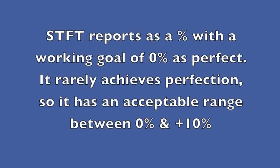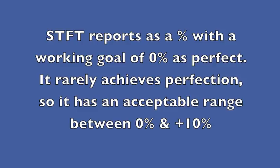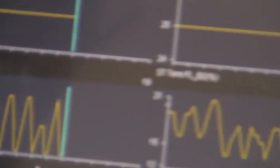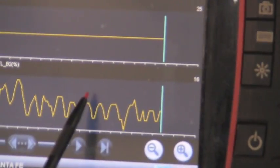Short-term fuel trim reports as a percentage with a working goal of zero percent as perfect. It rarely achieves perfection, so it has an acceptable range of zero to ten percent. Right now it's reading 19, 21, 23 — above the acceptable 10 percent limit, so this is too high. On this bank we're about 14 to 16, which is also a little too high.